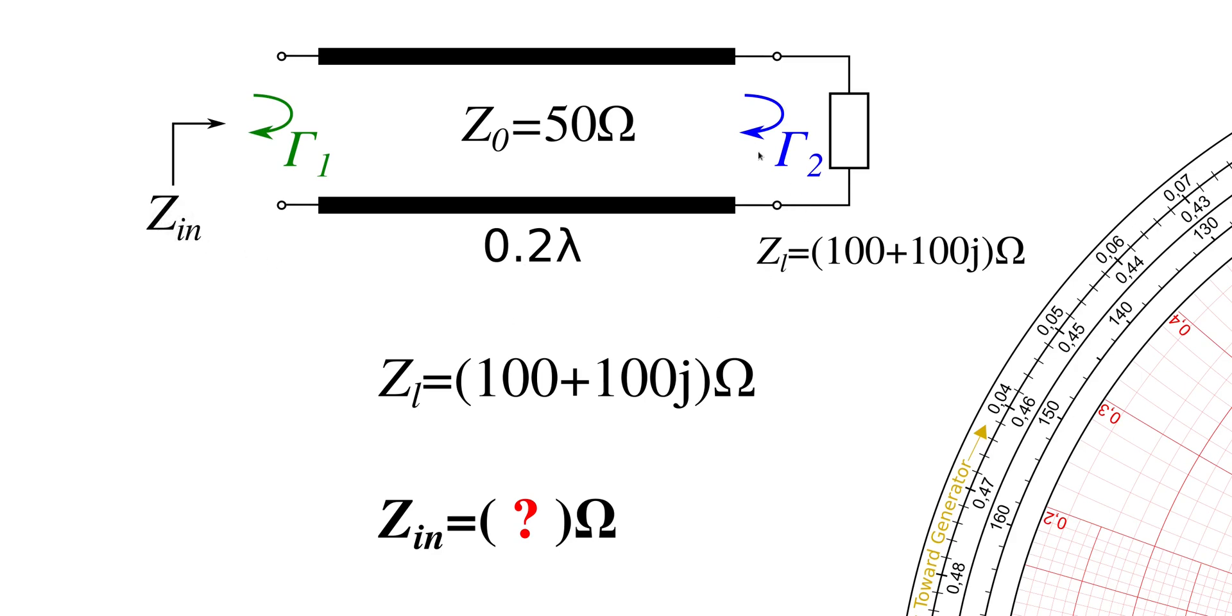How to find the input impedance? Well, first we mark in the Smith chart our load impedance. From the load impedance we can read off the gamma 2. Then we transform using our known rotation trick, the gamma 2 to a gamma 1 at the input. And at this point we can read off the Z_in value impedance.